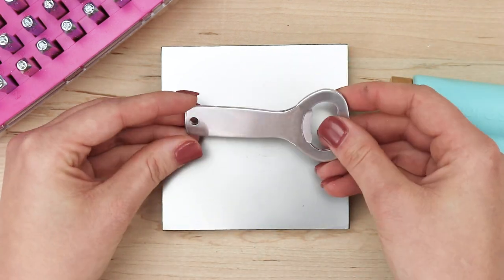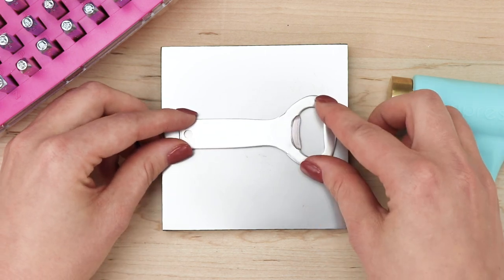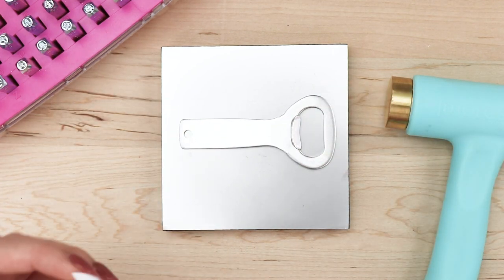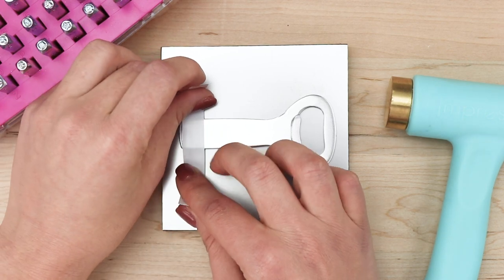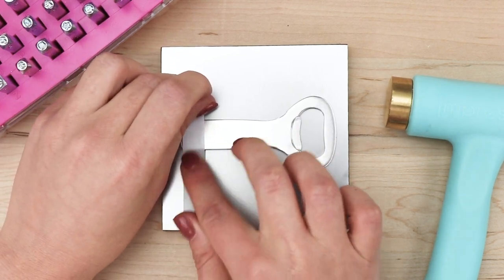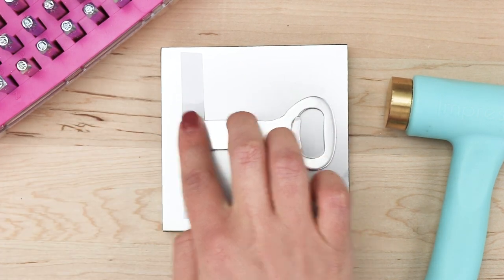Once the blue film is removed, place your bottle opener on the stamping block and take two pieces of stamp tape and secure your bottle opener to the block. This will ensure that the bottle opener doesn't move while you're stamping.